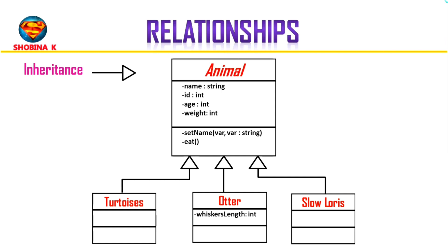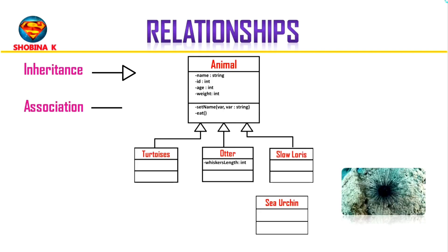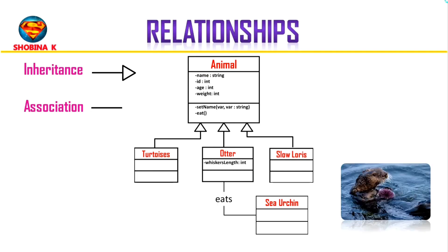Another type of relationship is association. If we have a class for sea urchin, we could draw an association, which is depicted by a simple line between otter and sea urchin, and we could say otter eats sea urchin. Here there is no dependency between them — it's just a basic association relationship.